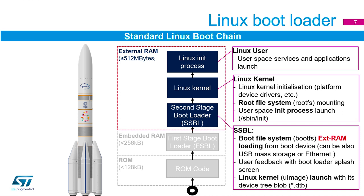The second stage bootloader loads all the different file systems in the system. It mainly loads the boot file system, pulling in all the different information for the kernel itself. This can be pulled from a different storage source — such as Ethernet — and it pulls in the rest of the device trees for features not already set up in the first stage bootloader.